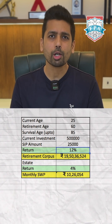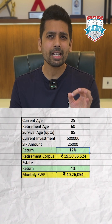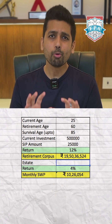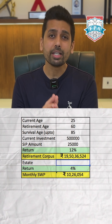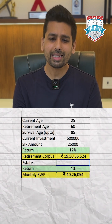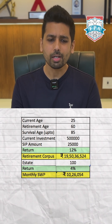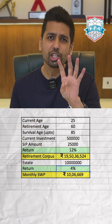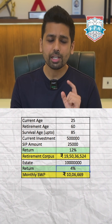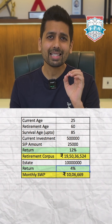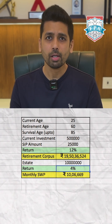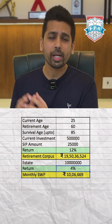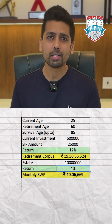At 12%, you will be able to accumulate 19.5 crore rupees when you retire. In the estate section, you mention what amount of money you want to leave behind for your children — let's say 1 crore. In spite of leaving 1 crore behind, at just 4% you will still be able to withdraw 10,06,000 rupees every month. You invested 25,000 a month and you are withdrawing 10,06,000 rupees a month.